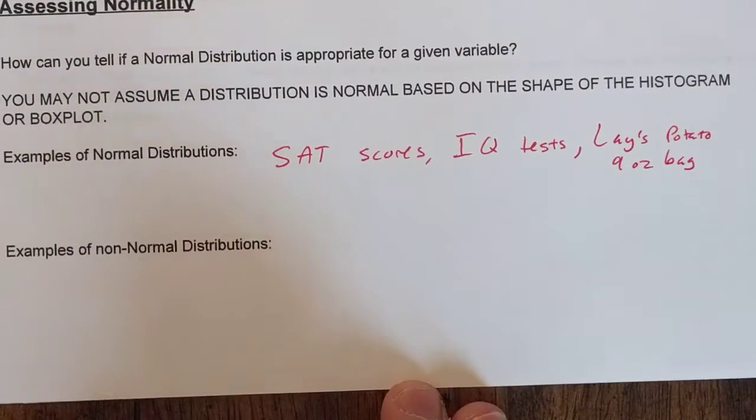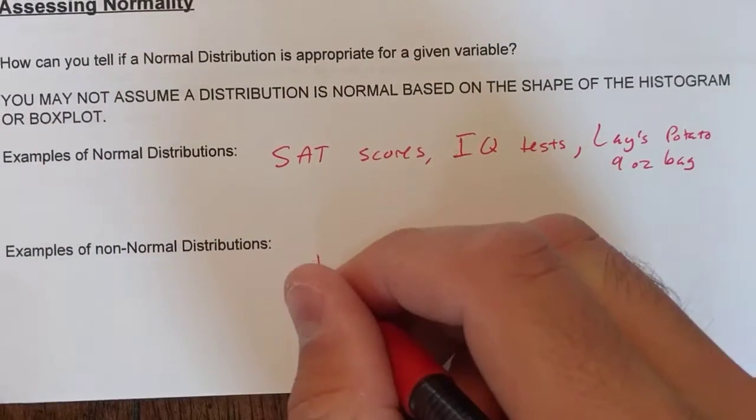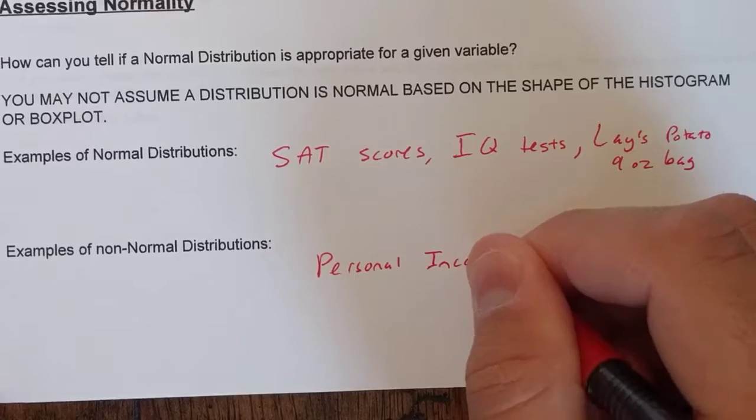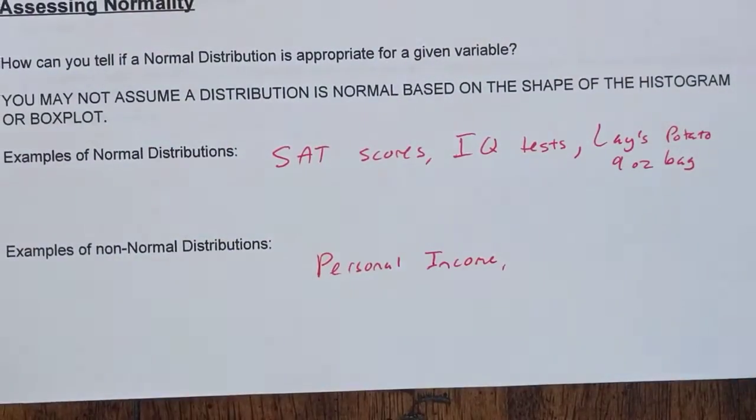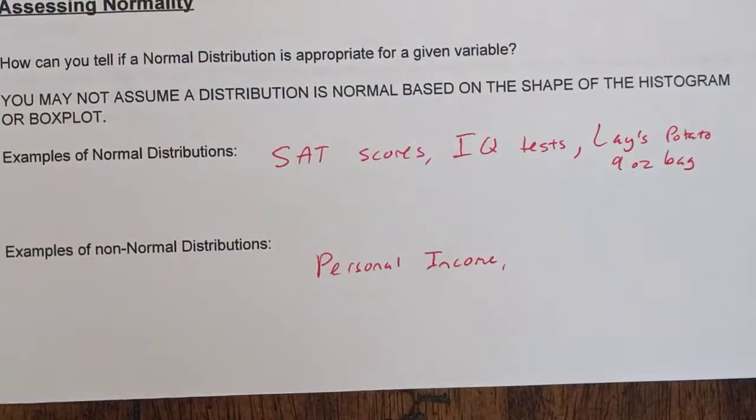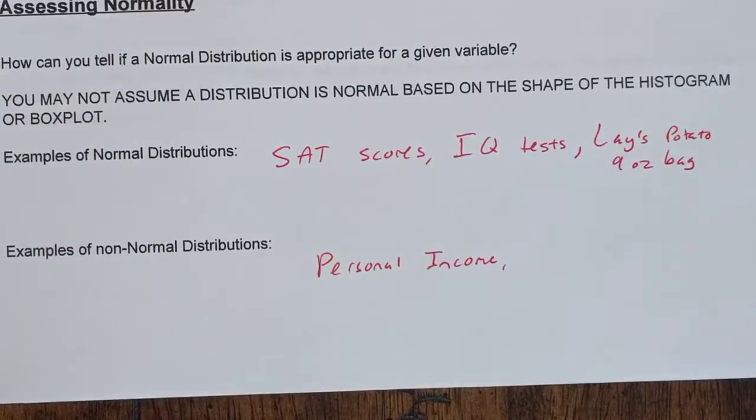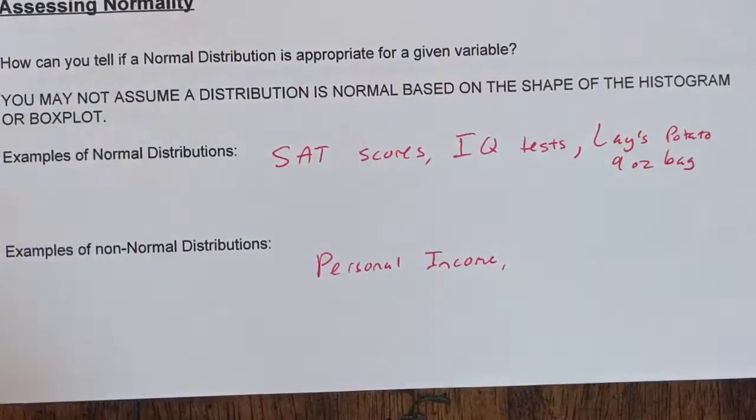Examples of non-normal distributions: things that are skewed. Personal income, because it's got a lower bound of zero and it seems that people that have lots of money can get more rich as the years go on, up into the billions. So it definitely skews the data. There's no normal curve there.